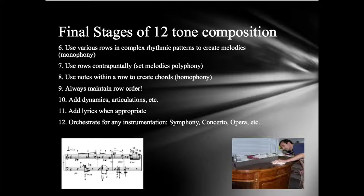The final stages of twelve-tone composition would include these final steps. This is not something that you need to do for this project, for this activity. But if you wanted to write a twelve-tone composition, you would use the rows that you have created to create different rhythmic patterns to create melodies, monophonically, meaning one note at a time. You could also use the rows contrapuntally — like Bach style, but with twelve-tone.